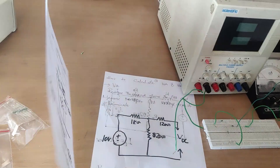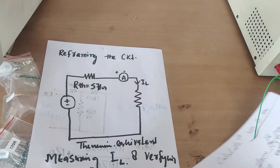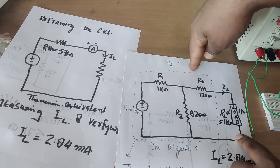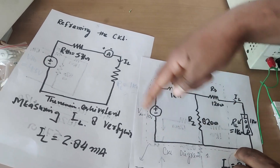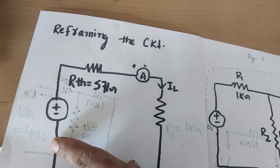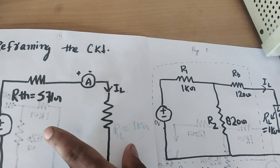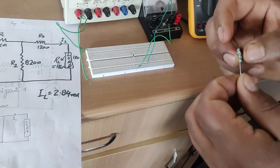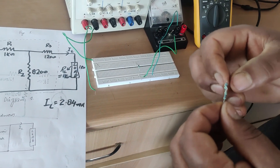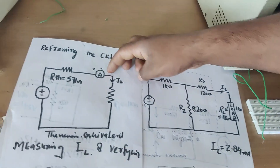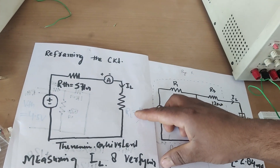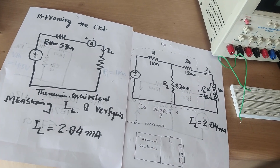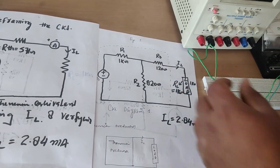Now we can reduce the original circuit to a Thevenin equivalent: a voltage VTH of 4.5 volts in series with RTH of approximately 570 ohms. I have two resistors in hand — one is 235 ohms — connected in series to form RTH. I will connect this in series with the 1 kilo ohm load resistance and measure the current IL, which should be approximately 2.84 milliamps.